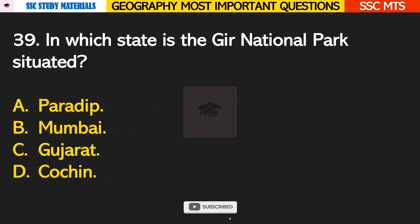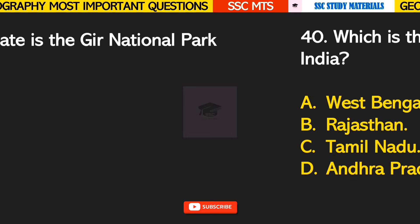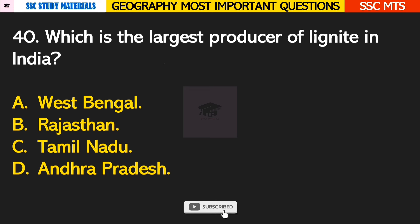Question number 39: in which state is the Gir National Park situated? Answer C — it is situated in the state of Gujarat. Question number 40: which is the largest producer of lignite in India? Answer C — Tamil Nadu.